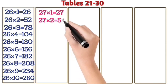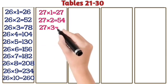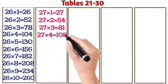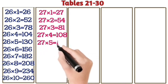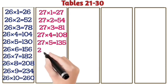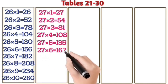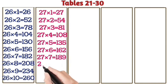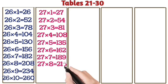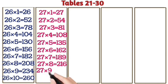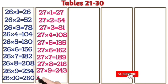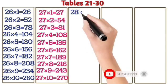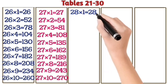27 ones are 27. 27 twos are 54. 27 threes are 81. 27 fours are 108. 27 fives are 135. 27 sixes are 162. 27 sevens are 189. 27 eights are 216. 27 nines are 243. 27 tens are 270.